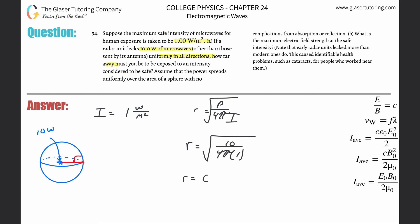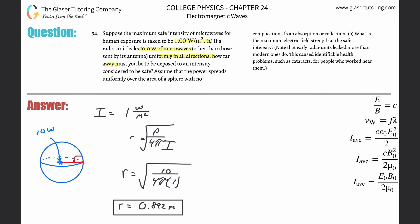What do we get? So we get here about 0.892, and that's in terms of meters. So a little less than a meter, you would be considered to be safe. That takes care of letter A. Letter B is saying, what is the maximum electric field strength?